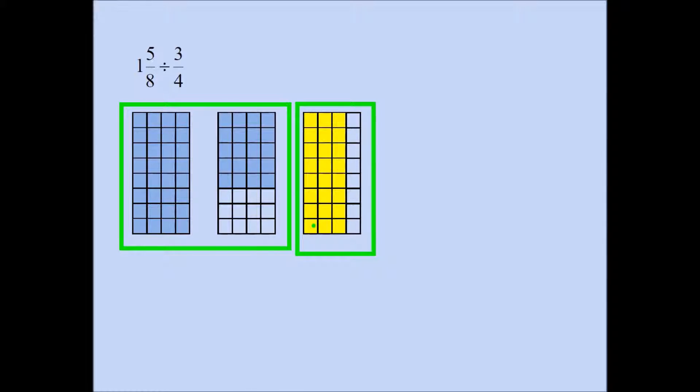I used a different color. I shaded 3 fourths. The 4 by 8 rectangle has 4 vertical strips. I shaded 3 of them. That means I'm shading 3 fourths of the 4 by 8 rectangle.